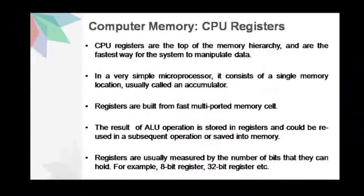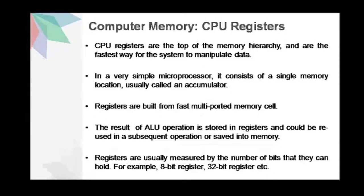Now let us look at the different types of computer memory. CPU registers are at the top of the computer memory hierarchy and are the fastest way for the system to manipulate data. In a very simple microprocessor, it will consist of a single memory location, which is usually an accumulator. Registers are built from fast multiport memory cells. The result of arithmetic and logic unit operations is stored in registers and could be reused in a subsequent operation or saved into memory. Registers are usually measured by the number of bits they can hold — for example, an 8-bit, 16-bit, or 32-bit register.